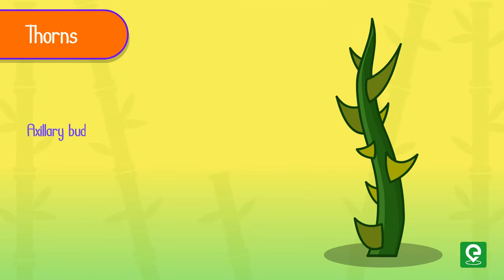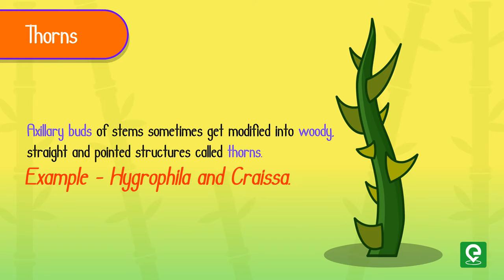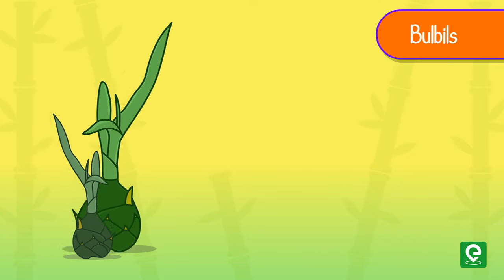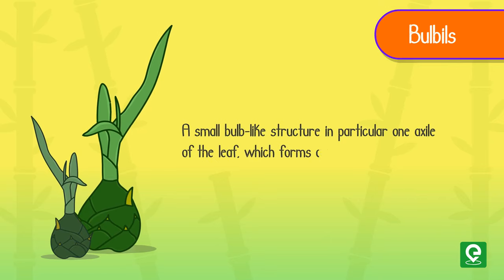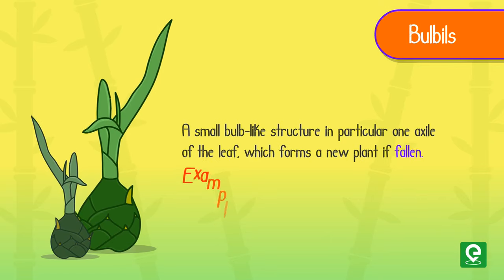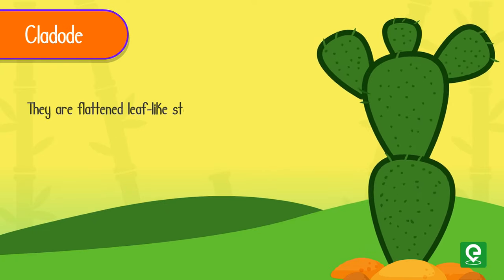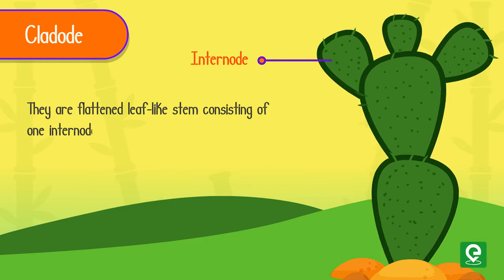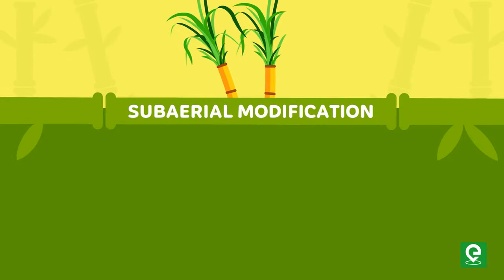Thorns: axillary buds of the stem sometimes get modified into woody, straight, and pointed structures called thorns. Example: Hygrophila and Carrissa. Bulbils: a small bulb-like structure in the axil of a leaf which forms a new plant if fallen. Example: Agave. Cladode: flattened leaf-like stems consisting of one internode only. Example: Asparagus.